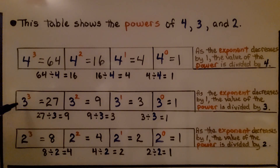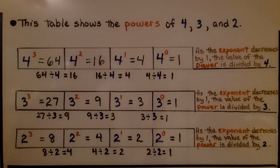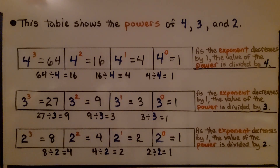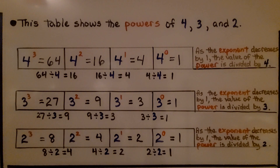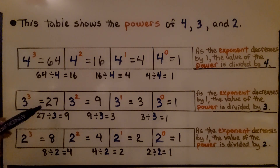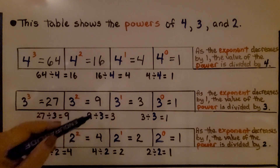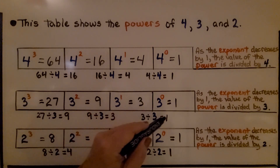Here we have 3 to the third power, that's 3 times 3 times 3, that's equal to 27. Here we have 3 to the second power: 3 times 3, that's equal to 9. 3 to the first power is equal to 3, and 3 to the 0 power is equal to 1. As the exponent decreases by 1 from 3 to 2 to 1 to 0, the value of the power is divided by 3, the base — going from 27 to 9 to 3 to 1.